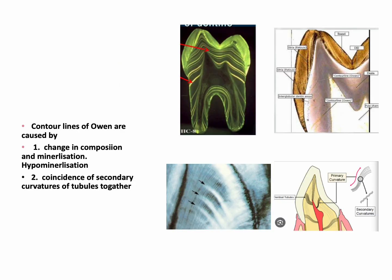The difference between the two types of contour lines of Owen: when they represent a change in secondary curvature, they appear as small interrupted lines that do not extend the whole width of the dentine. But if they are hypomineralized Anderson lines, the whole increment is hypomineralized and the line is continuous across the section. In both situations, these are contour lines of Owen.